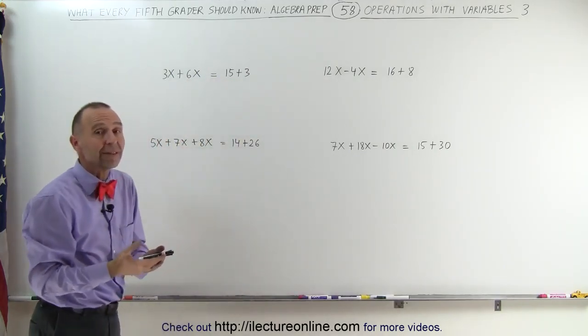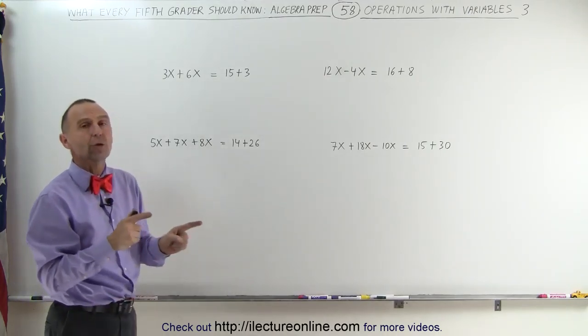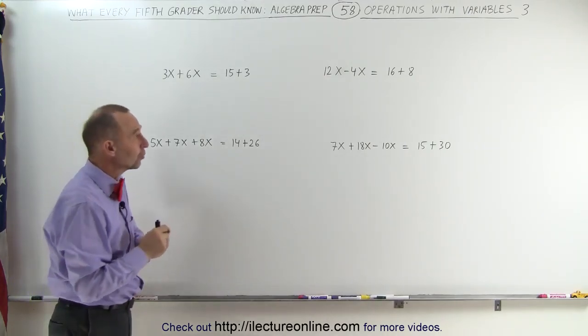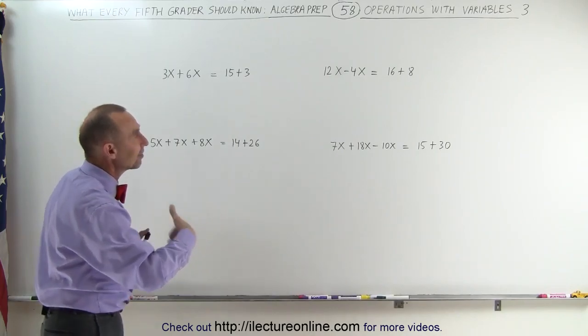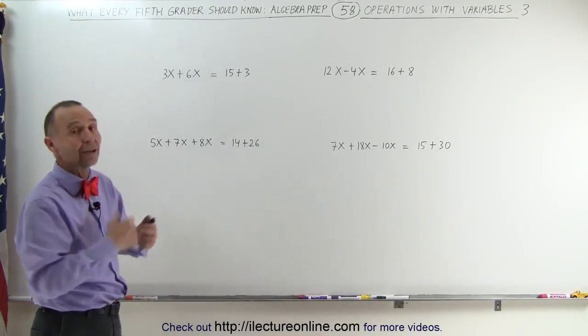And an equation means that the left side equals the right side. Now notice that all four equations have the unknown variable x, and the unknown variable x's are only on the left side of each of the equations. On the right side, we have a set of numbers that are simply added together.